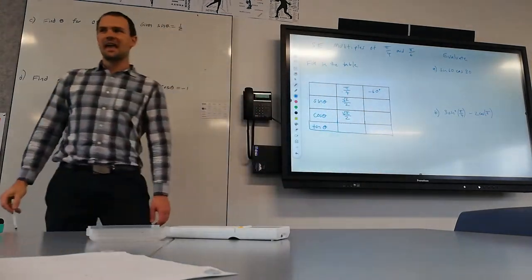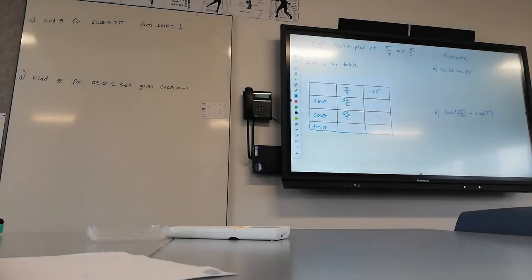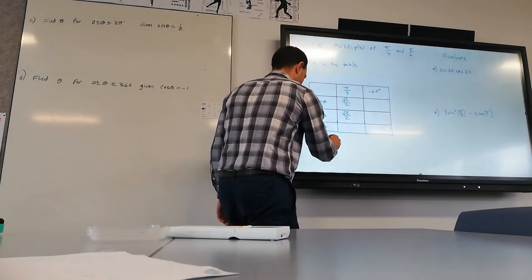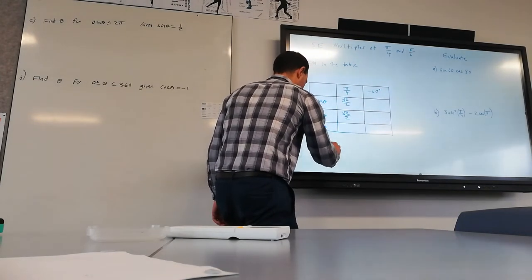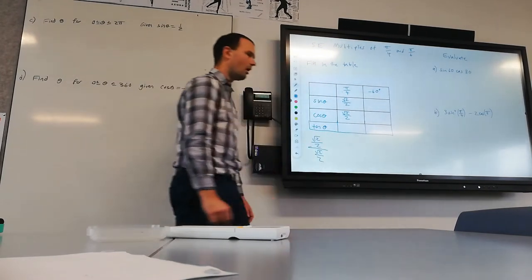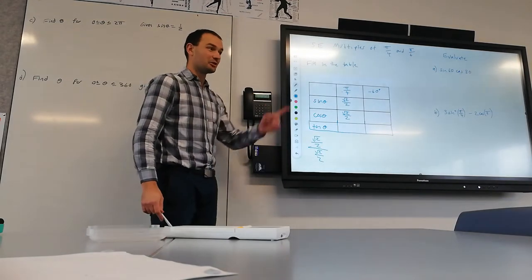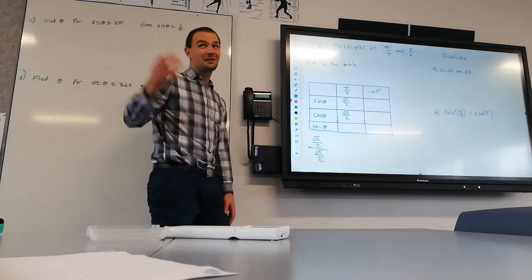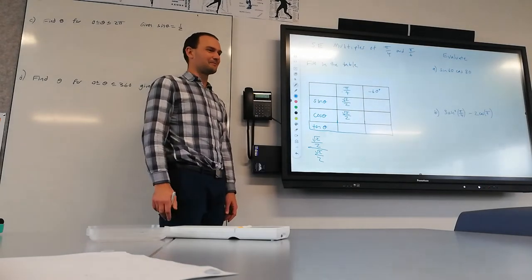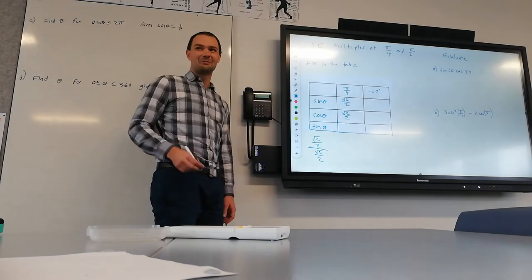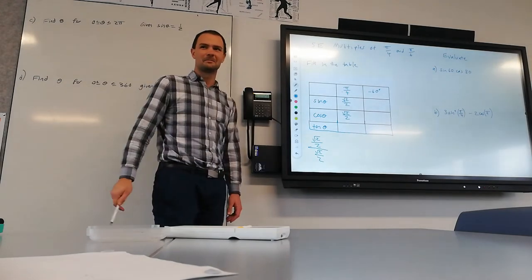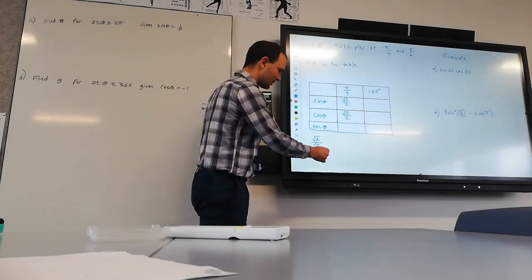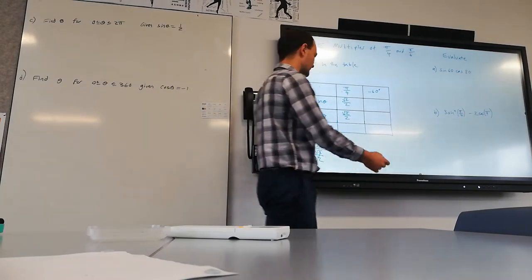How about tan? Remember, tan is sine divided by cos. So that's going to be root 2 on 2 on top of root 2 on 2. We could do that the extensive way and we would get the right answer. What's a simpler way? We've got the same thing at the top as we do at the bottom. So they're just going to cancel. We're left with the number 1.